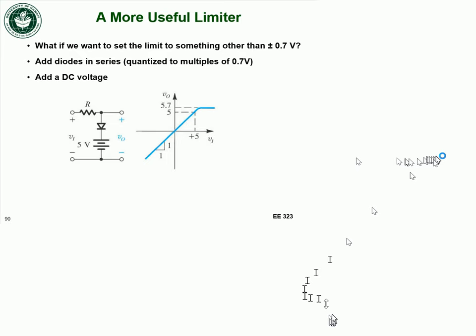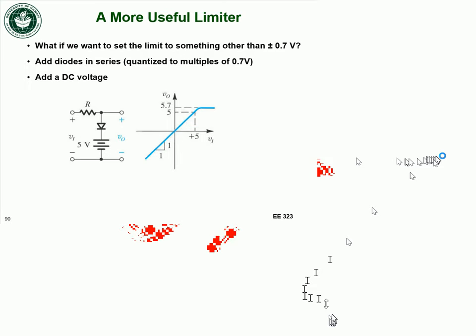I had a question on how this limiter is working, so I wanted to talk about that. The question was: if there is a 5-volt DC source in the circuit, how come the output voltage is not always going to be something over 5 volts? And why is the transfer characteristic the way it is, so that the output voltage can actually be less than 5 volts if the input is less than 5 volts or if the input voltage is negative?